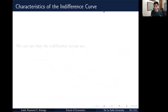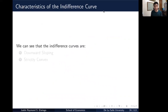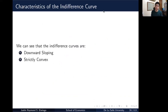From that graph, we can see two main characteristics. First, indifference curves are generally downward sloping. Second, indifference curves are strictly convex from the origin. So they're strictly convex and also downward sloping. Let's get into these properties.